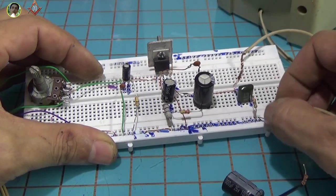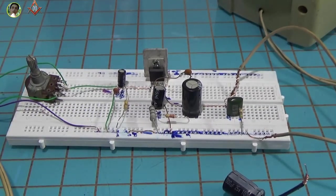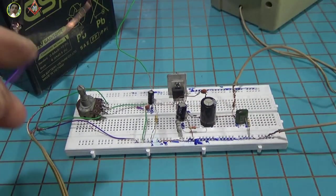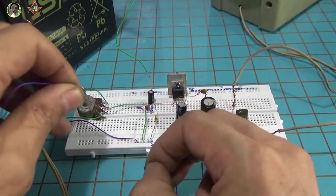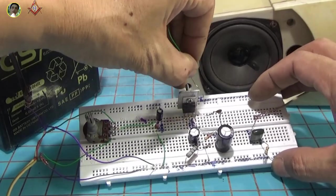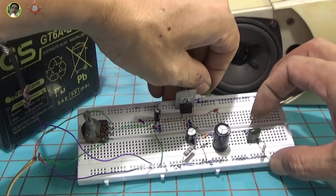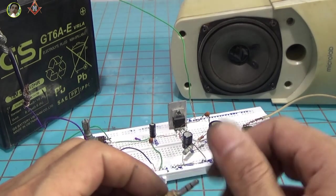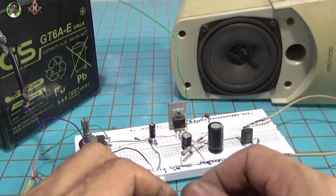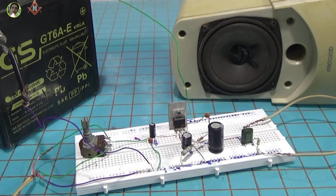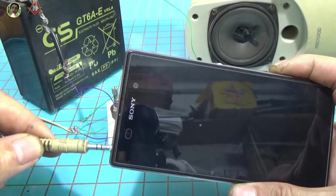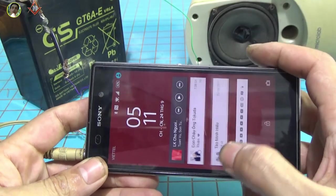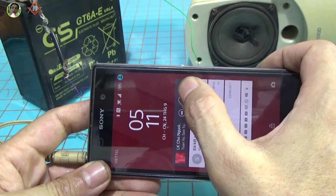Bây giờ mình sẽ cắm loa vào tại 2 cái điểm: một đường là mát và một đường là tại ngõ ra của con tụ 1000 micro barra. Cái chiếc áp mà các bạn cắm vào đấy thì là con VR 50k, con biến trở 50k. Và đầu tín hiệu các bạn sẽ chập 2 đầu lại với nhau để cho nó khỏe. Và một pha mát, còn 2 đầu chập lại với nhau để cho nó khỏe.